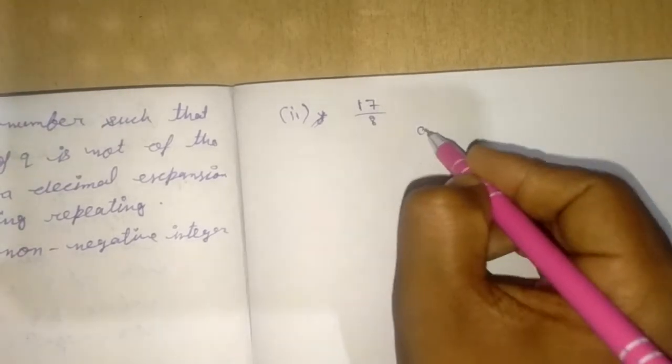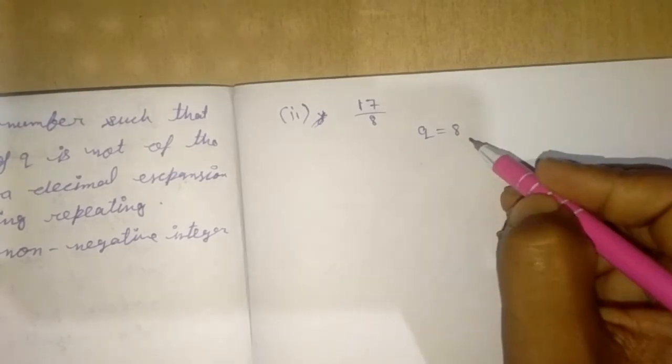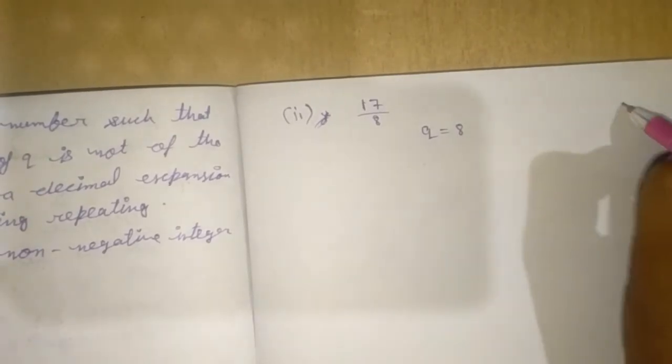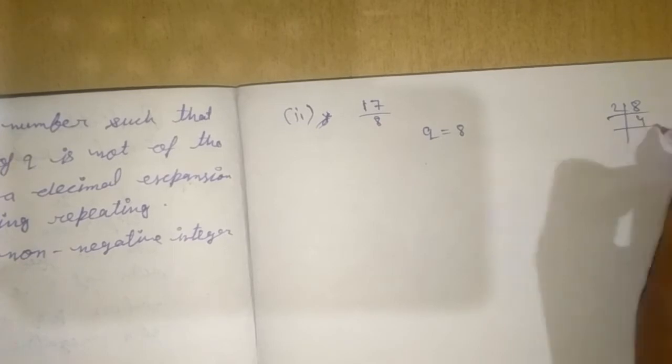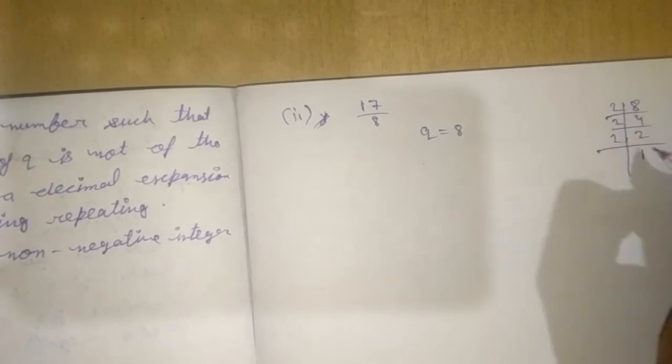Okay, here we can observe that q is equal to 8. So first we do prime factorization of 8, we will get 8 by 2 and 4 times 2 and 2 times 2 again and 1.